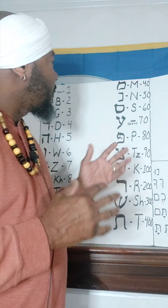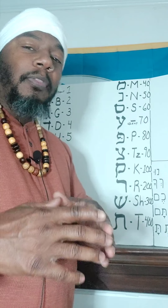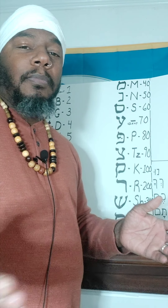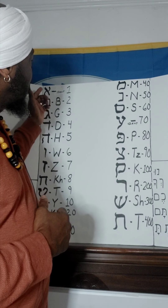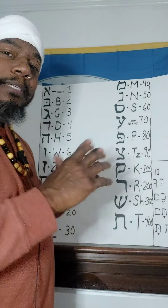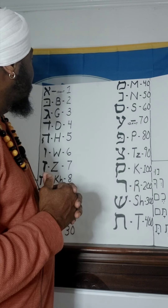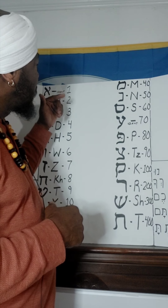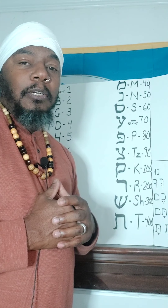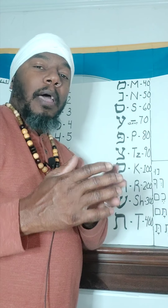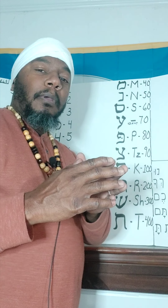One thing about the Hebrew: it has more power, more significance than the English. Because we see with the Hebrew, not only do the letters have a symbolic meaning based off of its shape, but it also has a numerical equivalent. In the English, it is not so with the English alphabet. But with the Hebrew, the letters carry multiple meanings.